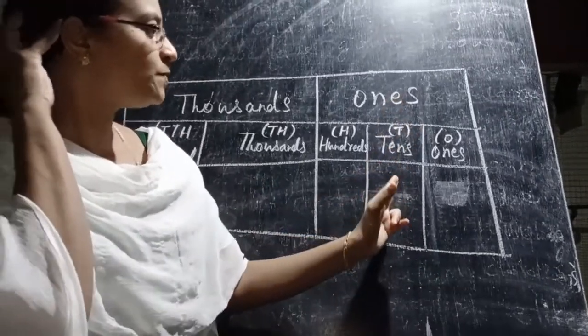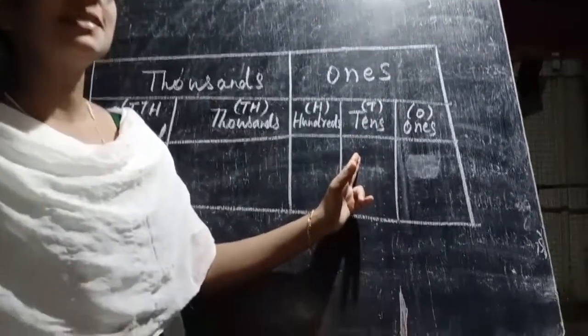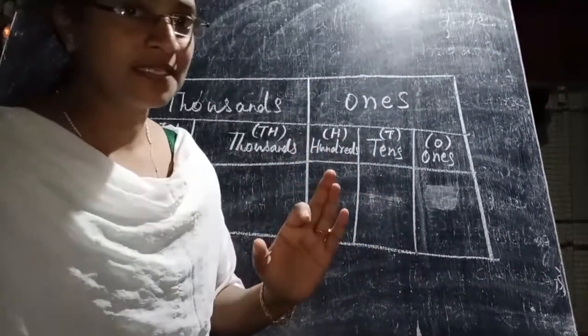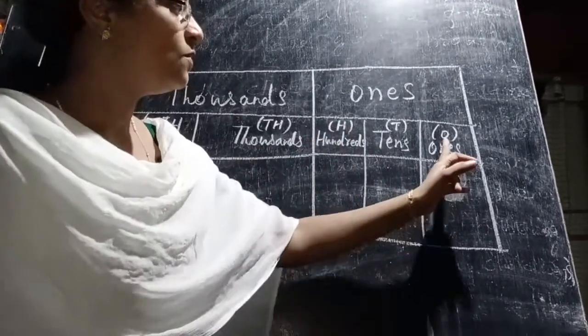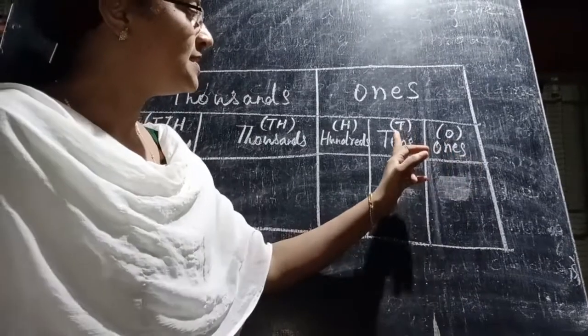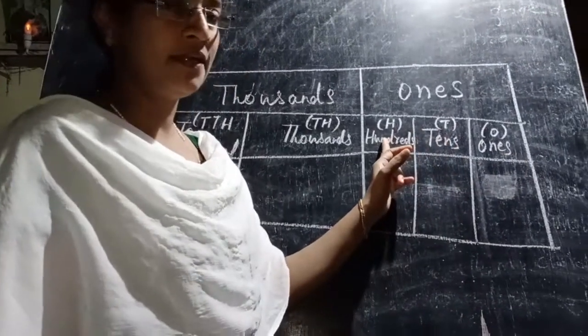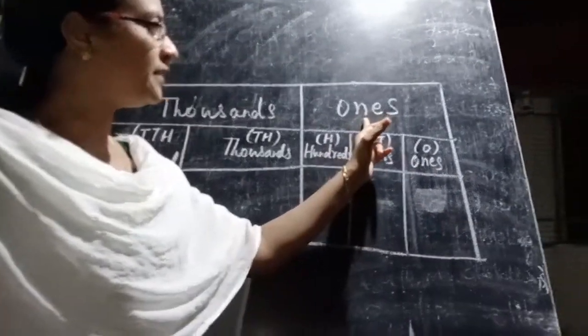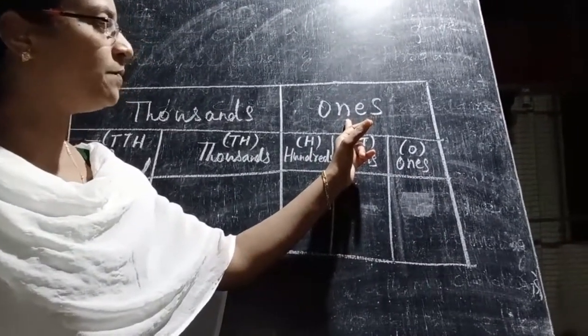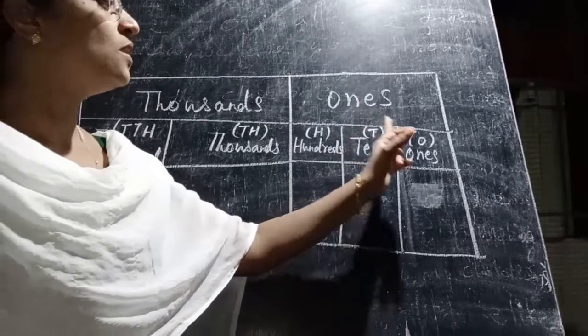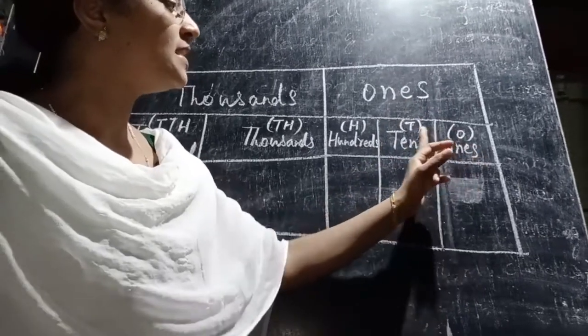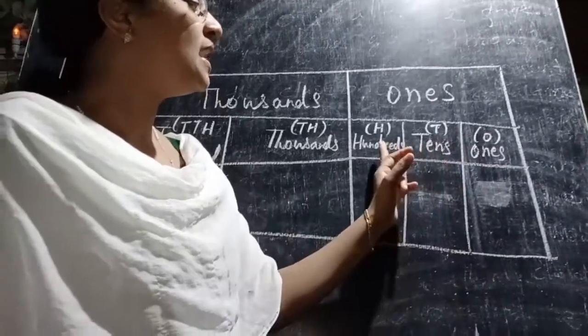The ones period has three places: ones, tens, and hundreds.